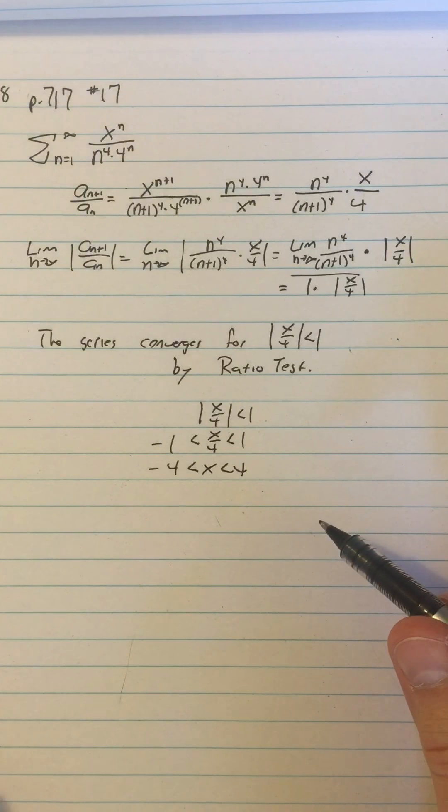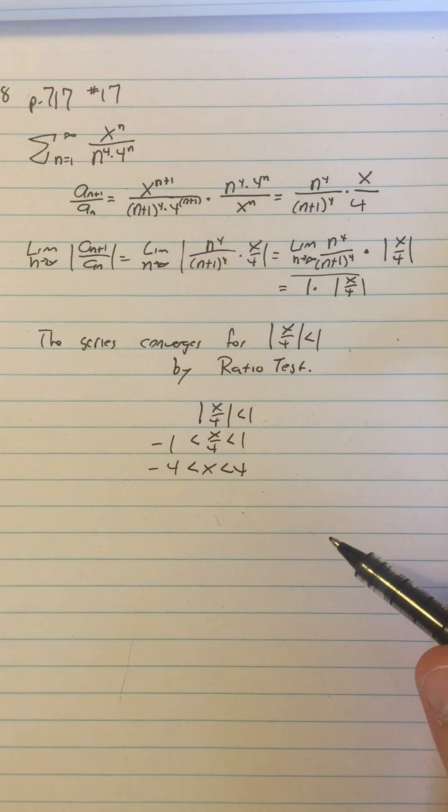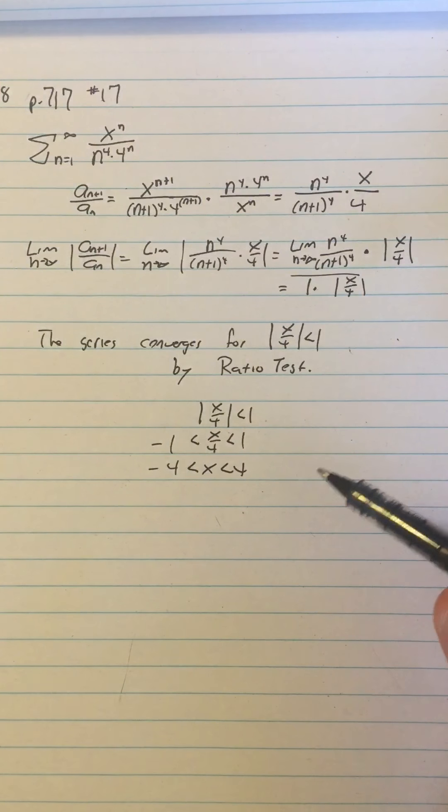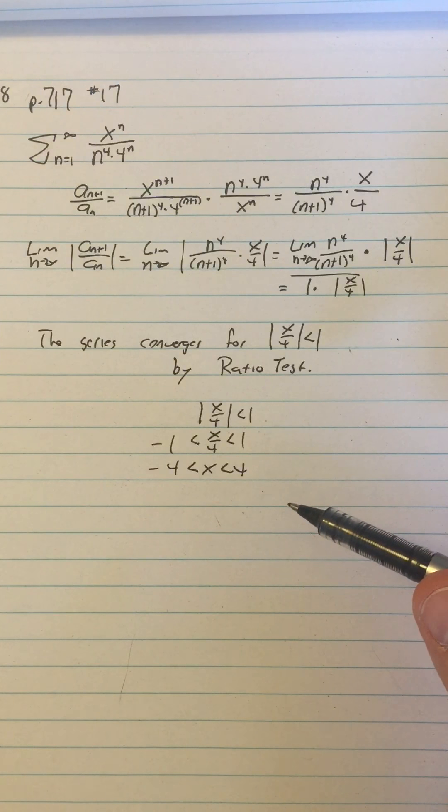So I already know that the series converges between negative 4 and 4. But we're always in these problems going to be looking at what are the endpoints of the interval of convergence.